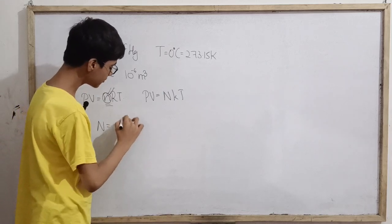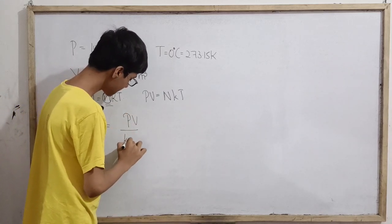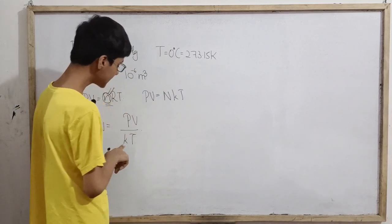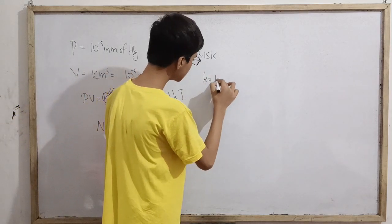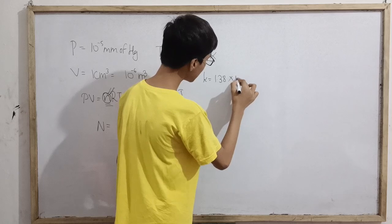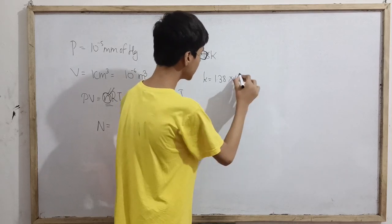The total number of molecules is N = PV by kT, where k is the Boltzmann constant. So k value is 1.38 into 10 to the power minus 23.